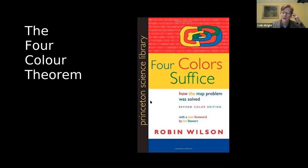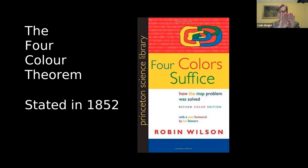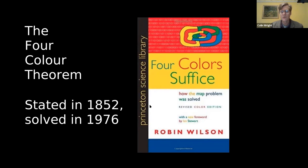So we'll start with coloring. I mentioned the four color theorem. This is a great book written by a friend of mine, Robin Wilson, where he talks about what the problem is and how it's solved. Many of you know this, so I'm not going to go into great detail, but the basic idea is that when we have a map, how many colors does it take to color it if two regions that share a length of border must get different colors? This was originally stated in 1852 and not finally solved until 1976, although it raised controversy because it was computer-assisted.